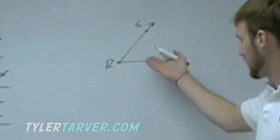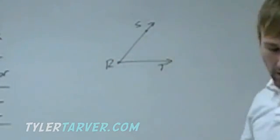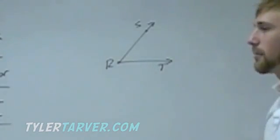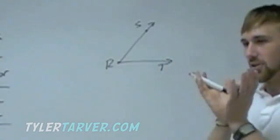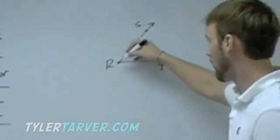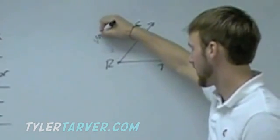This right here — that's an angle. An angle is made up by two rays who meet at a vertex. That point right there is called a vertex.